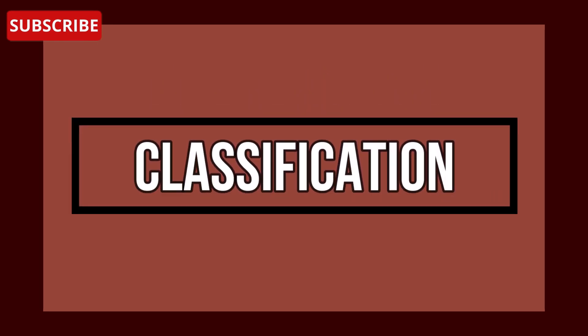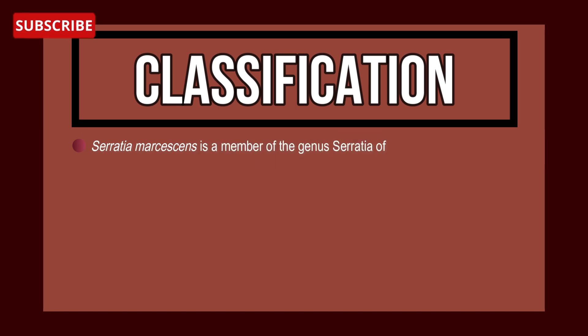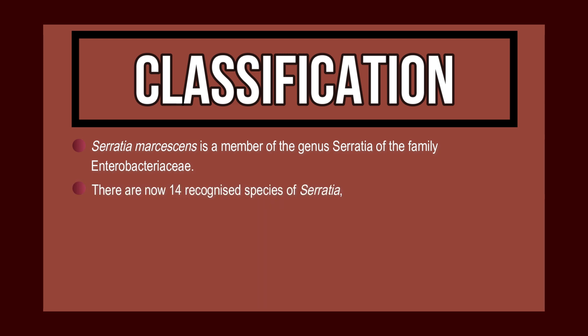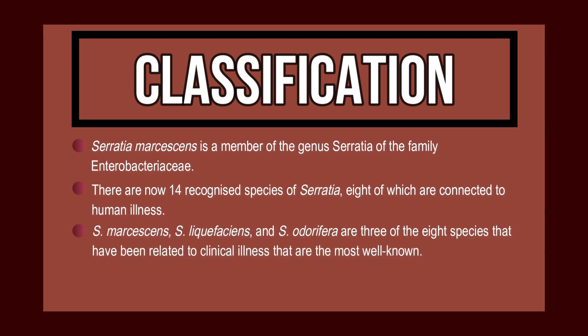Serratia marcescens has now been connected to every source of illness, including wound infections, UTIs, septicemia, meningitis, and respiratory tract infections. Now let's head to the classification of Serratia marcescens. It is a member of the genus Serratia of the family Enterobacteriaceae. There are now 14 recognized species of Serratia, eight of which are connected to human illnesses.